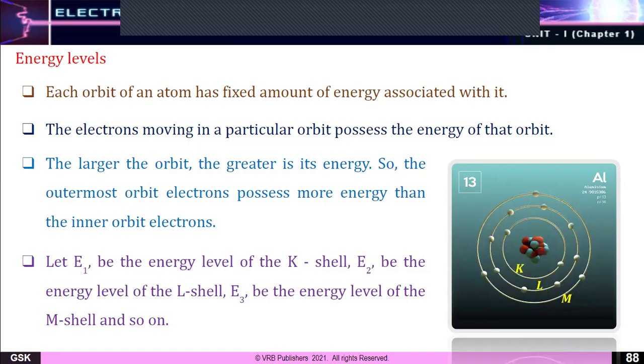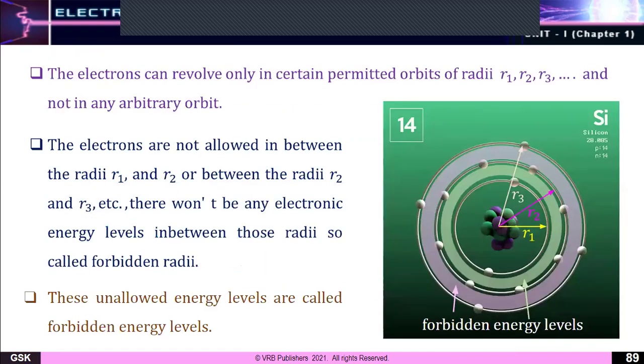Let E₁ be the energy level of the K shell, E₂ be the energy level of the L shell, and E₃ be the energy level of the M shell. The electrons can revolve only in certain permitted orbits. Each orbit has a radius: the inner orbit has radius R₁, L has R₂, M has R₃, and so on.